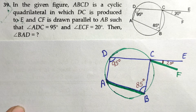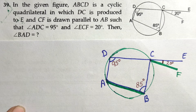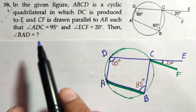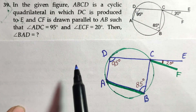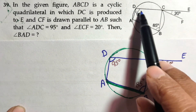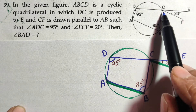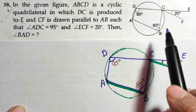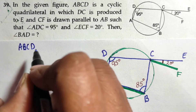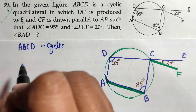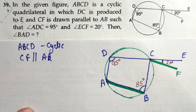Let's see question 39. Children, this next level question we won't understand in a single look — let's understand it step by step. In this figure, ABCD is a cyclic quadrilateral in which DC is produced to point E, and CF is drawn parallel to AB.